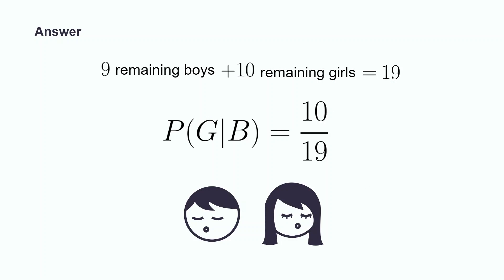Let event G be a girl being selected on the second drawing and let event B be a boy being selected on the first drawing. Because the teacher has already selected a boy, there are 9 boys left. Since no girls have been selected yet, there are 10 girls still left. Adding 10 and 9, we get 19 for our denominator. Thus, the probability of selecting a girl is 10 over 19.